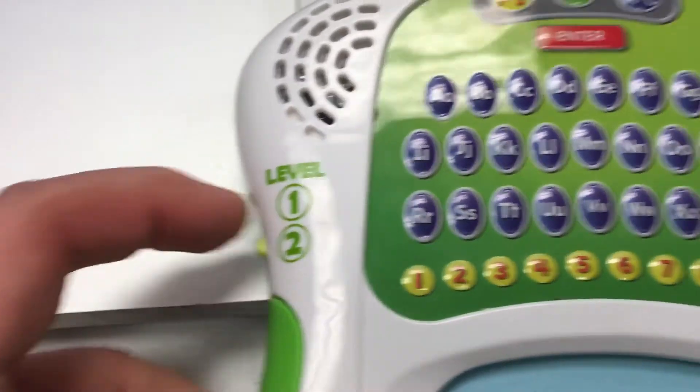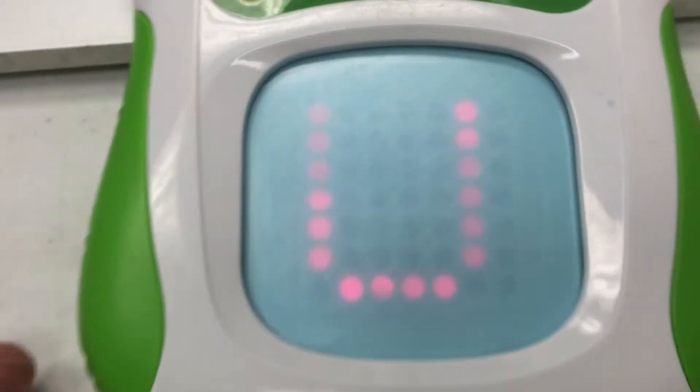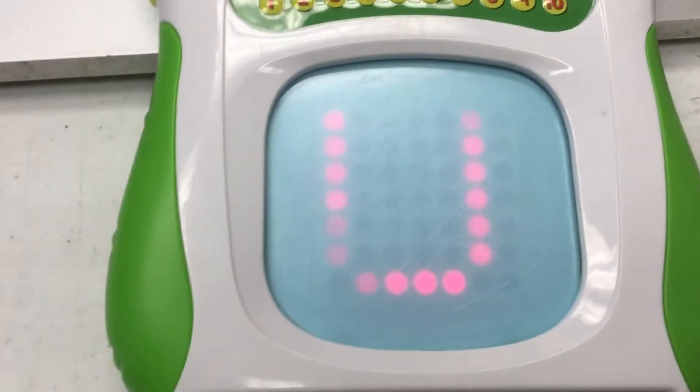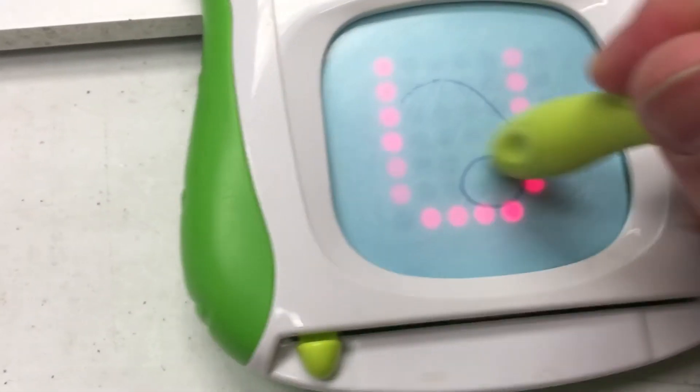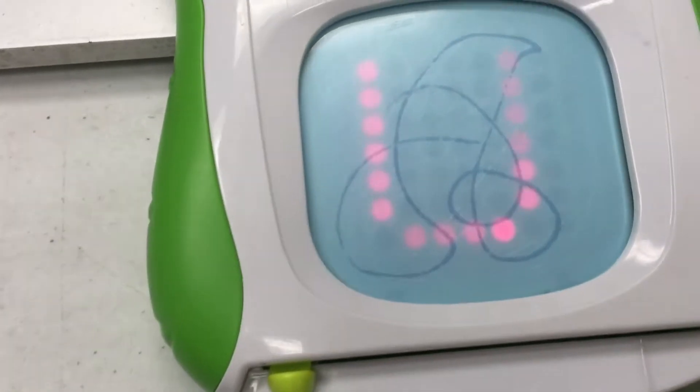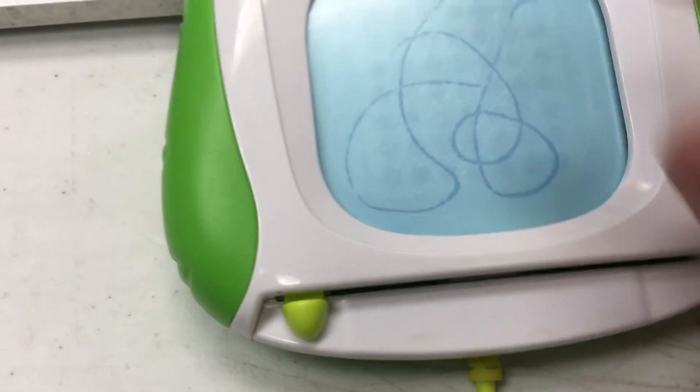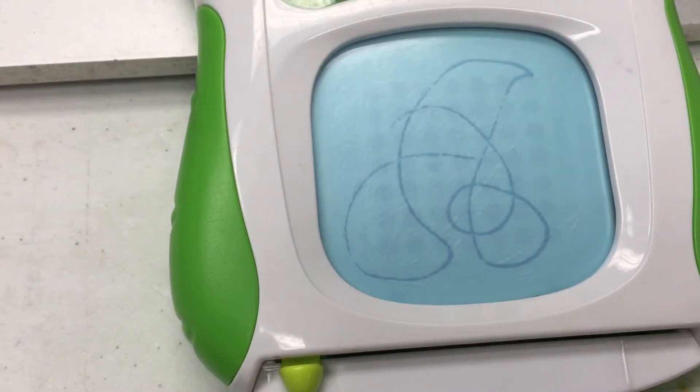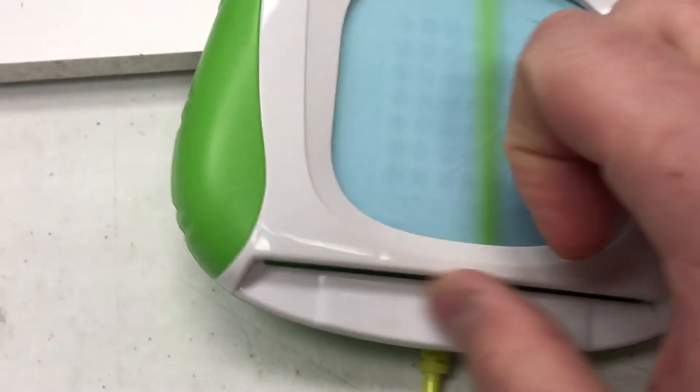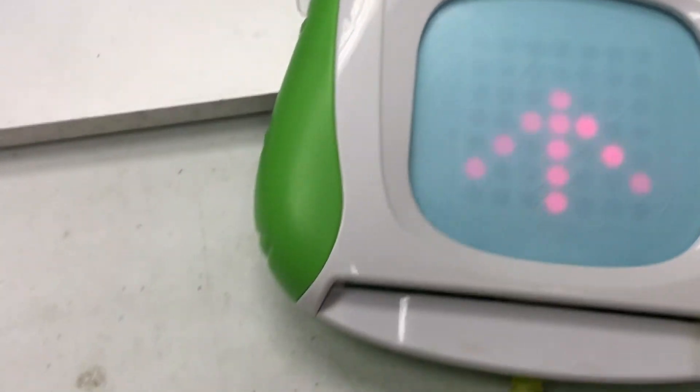The uppercase letter U. Let's write it. Let's make a curved line. Let's make a curved line. Start here. Yeah, it doesn't really work still. So you can do numbers too. Press a letter or a number button.